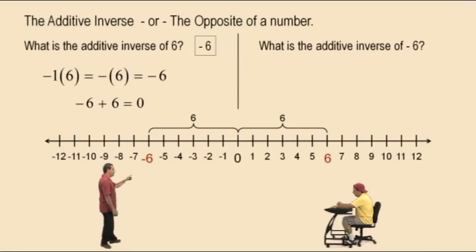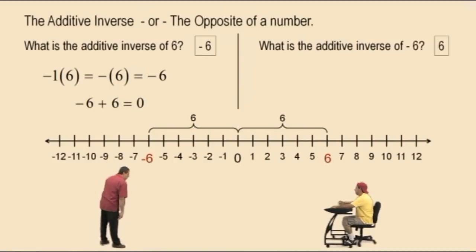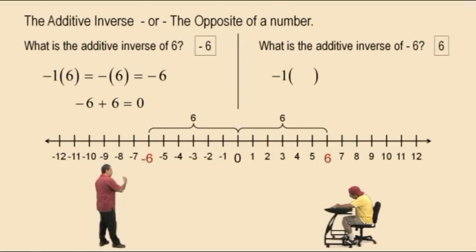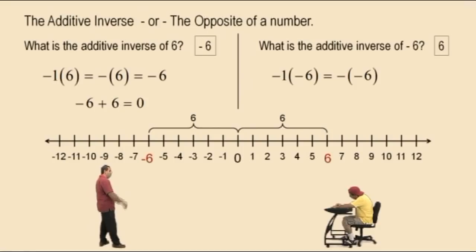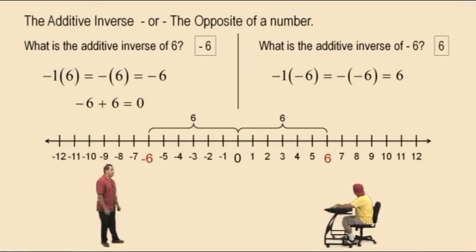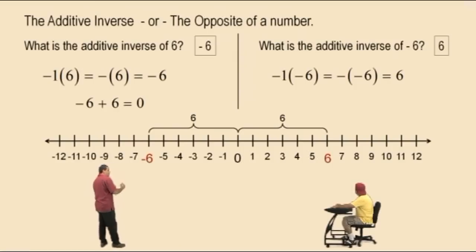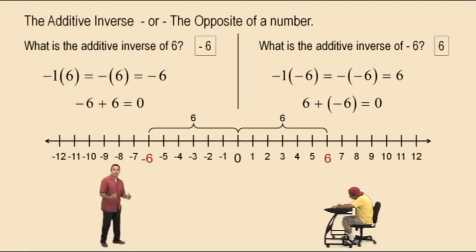What is the additive inverse of negative 6? 6! That's right. To calculate it, you multiply by negative 1: negative 1 times negative 6. A negative times a negative is a positive, so we get 6. The additive inverse of negative 6 is 6. And the sum of 6 and negative 6 is 0 — since 6 plus negative 6 is the same as 6 subtract 6.